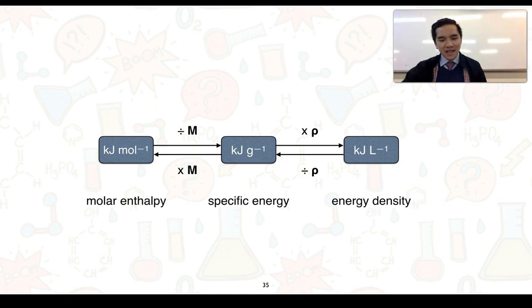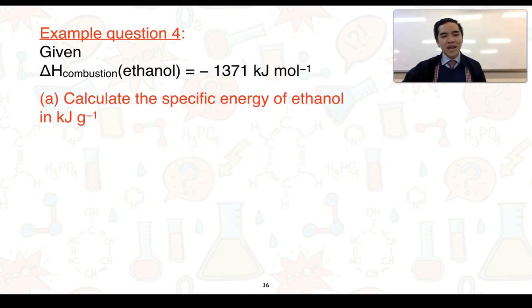If the specific energy is given and we want to calculate the energy density, then we need to know the density of the fuel and we would multiply it by the density which is in grams per liter to convert kilojoules per gram to kilojoules per liter, and we could do the opposite to convert it back.